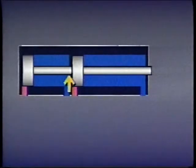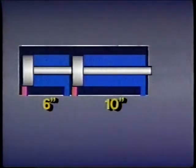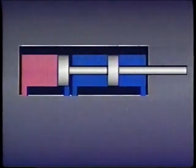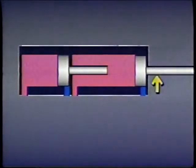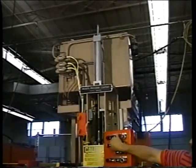Unlike tandem cylinders where the pistons are joined to the same rod, the rods in a duplex cylinder are not connected — each rod has a different stroke. This allows the load to be moved to several positions. For example, a duplex cylinder with strokes of six inches and ten inches can move loads to one position when both pistons are at one end, to another position when the six-inch stroke is extended, and to a third position when the ten-inch stroke is extended.